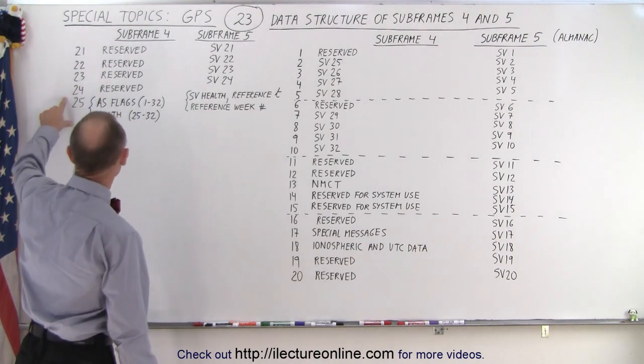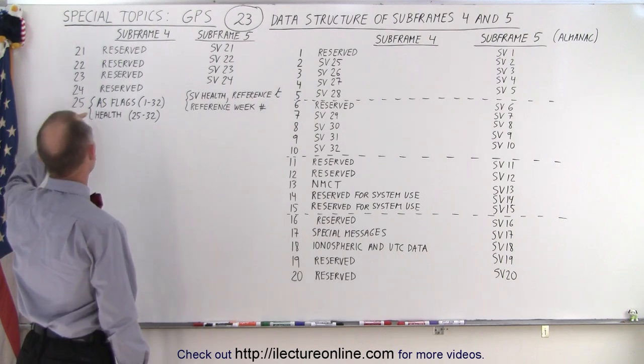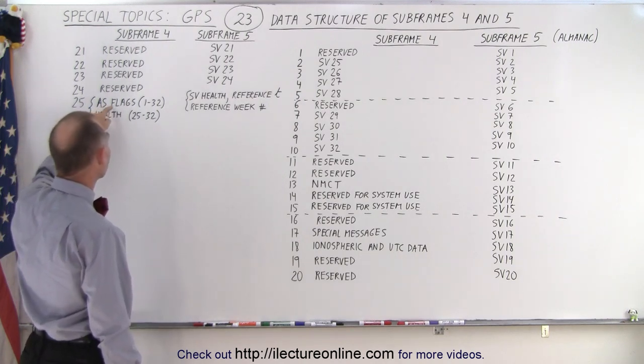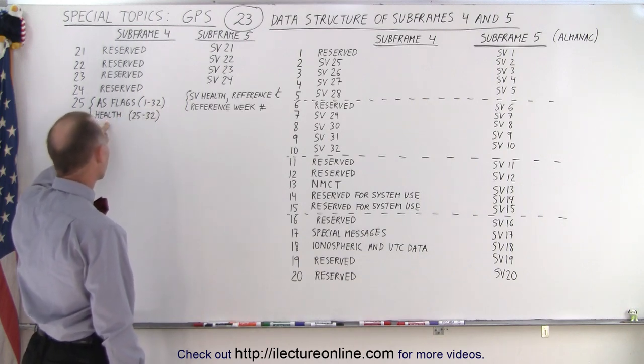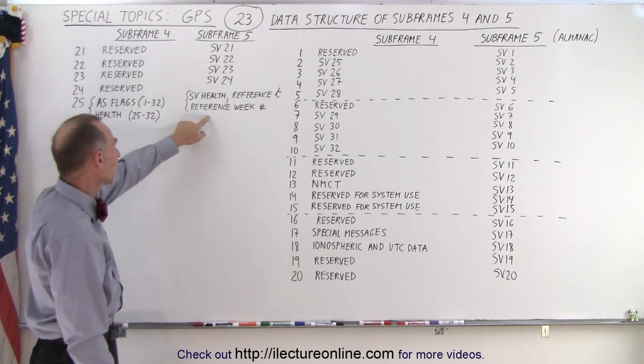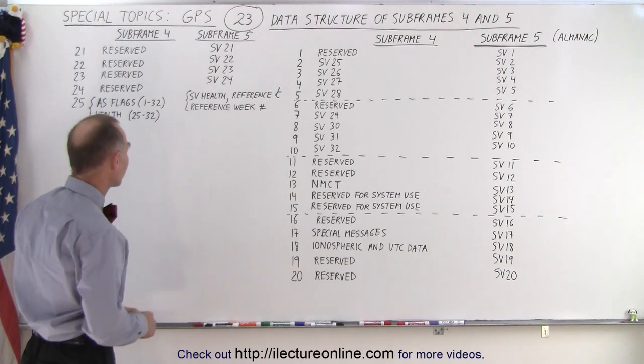And then notice on 25, the last of the 25 subframes, we have the AS flags, which is the anti-spoof flags for all 32 space vehicles. And on top of that, the health flags for space vehicles 25 to 32, which were not included here in subframe five.